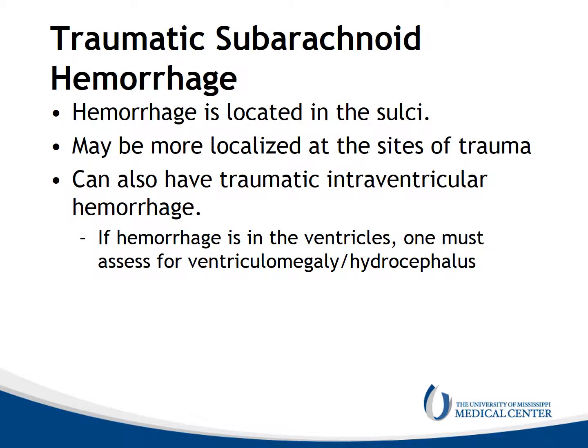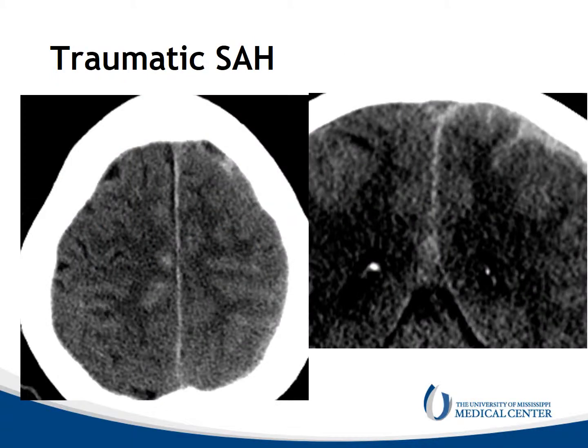Traumatic subarachnoid hemorrhage also occurs. Hemorrhage is located in the sulci and may be more localized to the sites of trauma. You can also get traumatic intraventricular hemorrhage, and any time you have intraventricular hemorrhage, one must assess the ventricles for ventriculomegaly and hydrocephalus, which needs to be addressed. Here's traumatic subarachnoid hemorrhage — we can see in the sulci, particularly in the right frontal lobe, areas of hemorrhage extending into the sulci. There's also a small subdural in the left hemisphere.